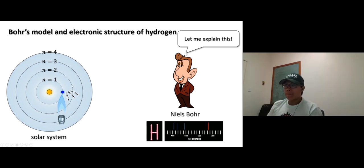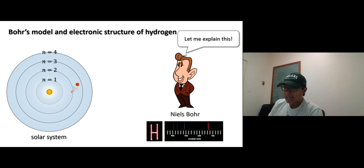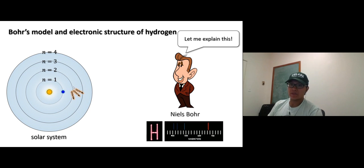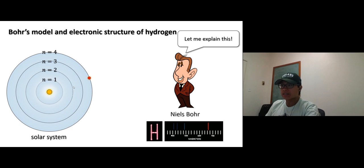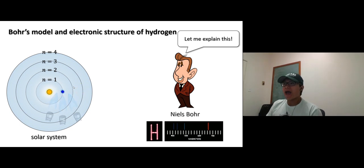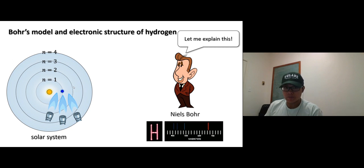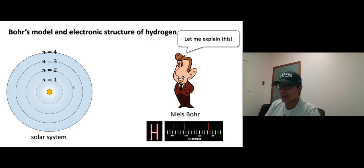If we add even more energy, the electron jumps up to a higher energy level, stays there for a while — it's not stable — then relaxes back to the ground state, releasing more energy. Adding even more energy sends it to an even higher level. If you add an infinite amount of energy, the electron will just fly away.